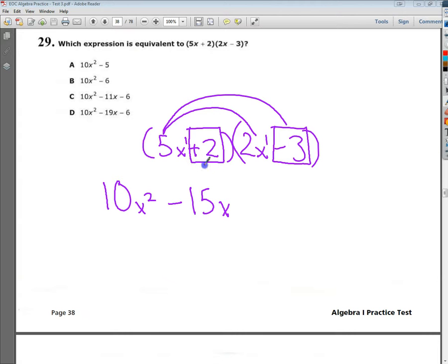Sometimes a visual cue is a good idea. Then, you have 2 times 2, which is, of course, positive 4x, or plus 4x in this case, and then I want 2 times negative 3, which is minus 6.